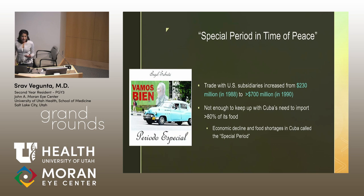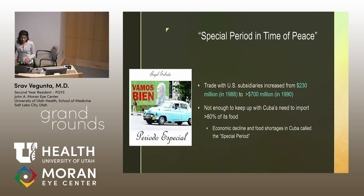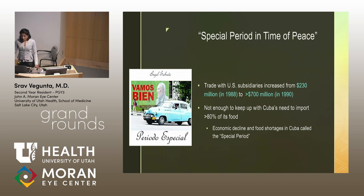Due to the economic decline, Fidel Castro called this period the 'special period in a time of peace.' As the Soviet Union was declining in the late 1980s, trade with U.S. subsidiaries increased from about $230 million in 1988 to over $700 million in 1990. But it still wasn't enough food coming into Cuba — over 80% of its food was imported.